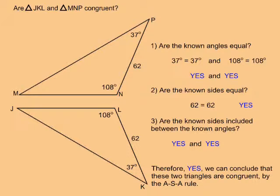Question 2 says, are the known sides equal? Both triangles have a 62 unit side. Yes, the known sides are equal.